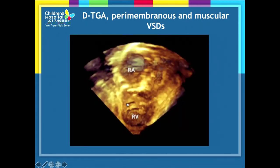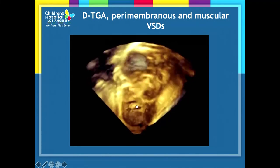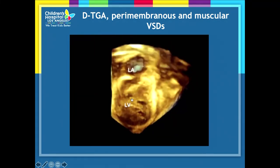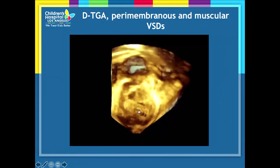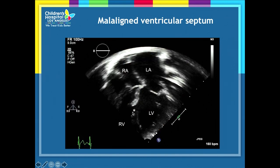This 3D echo shows muscular VSDs that appear more slit-like, and a perimembranous VSD in a patient with transposition of the great arteries — note how different the VSD looks from the left side compared to the right side, with some infundibular resection as well. Sometimes malalignment of portions of the septum means the defect exists because the parts did not come together, and these can be more difficult to close.